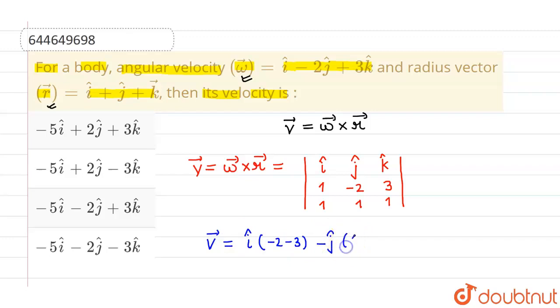Minus j cap times 1 minus 3, and plus k cap times 1 plus 2. So basically this v vector comes out to be minus 5 i cap plus 2 j cap plus 3 k cap. This is the velocity vector.